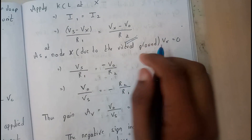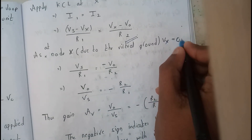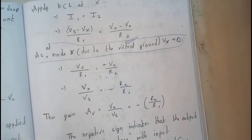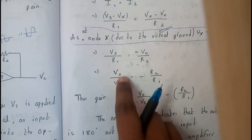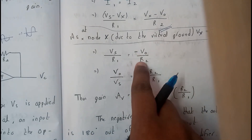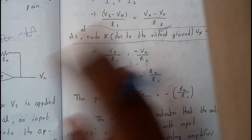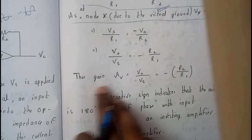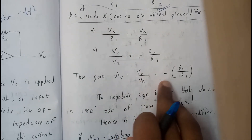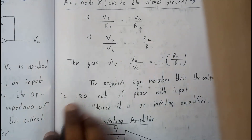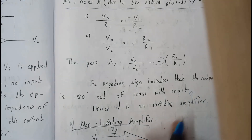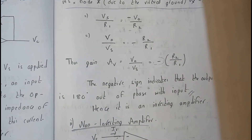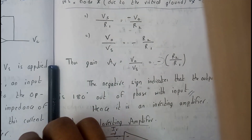At node X, due to virtual ground, VX equals zero. Substituting VX = 0, we get VS/R1 = −V-naught/R2. Rearranging, V-naught/VS = −R2/R1, so the voltage gain AV = −R2/R1. The negative sign indicates a 180-degree phase shift, meaning the output is 180 degrees out of phase with the input — hence it is called an inverting amplifier.